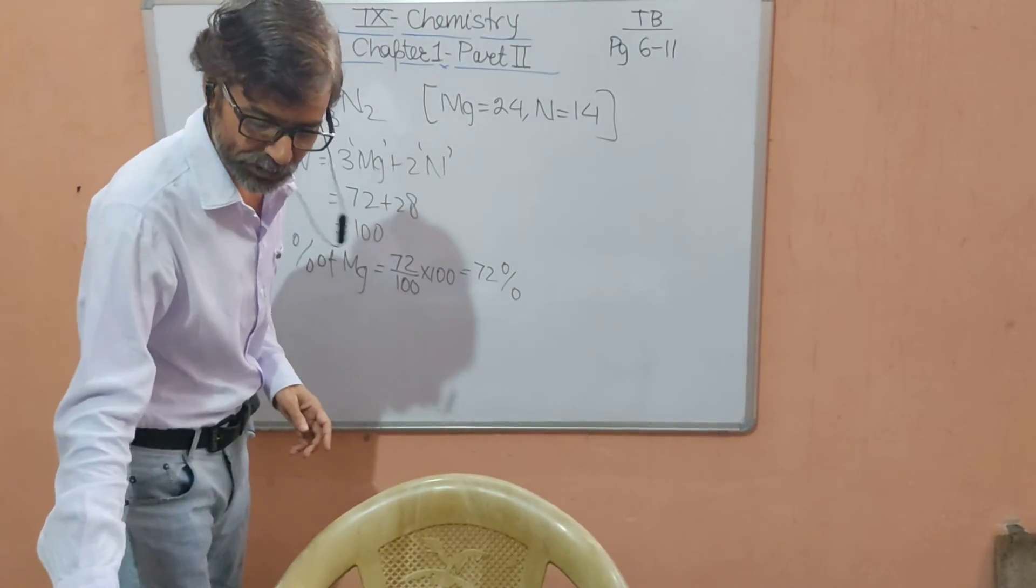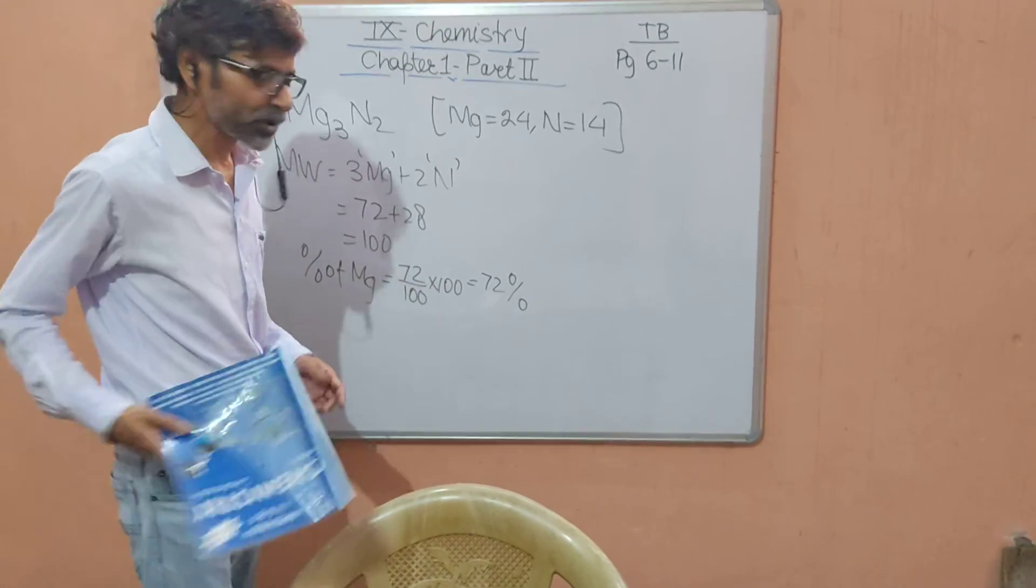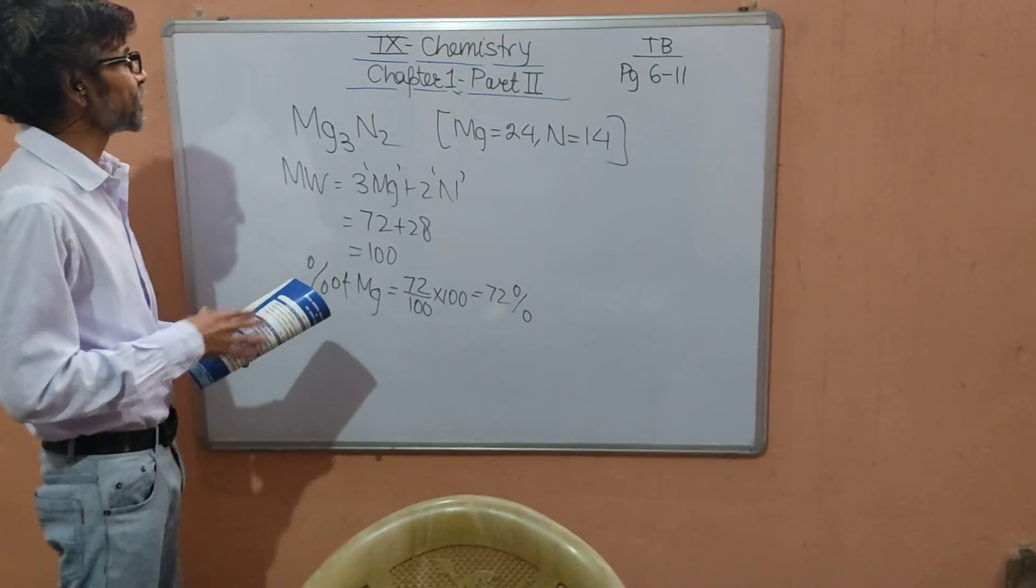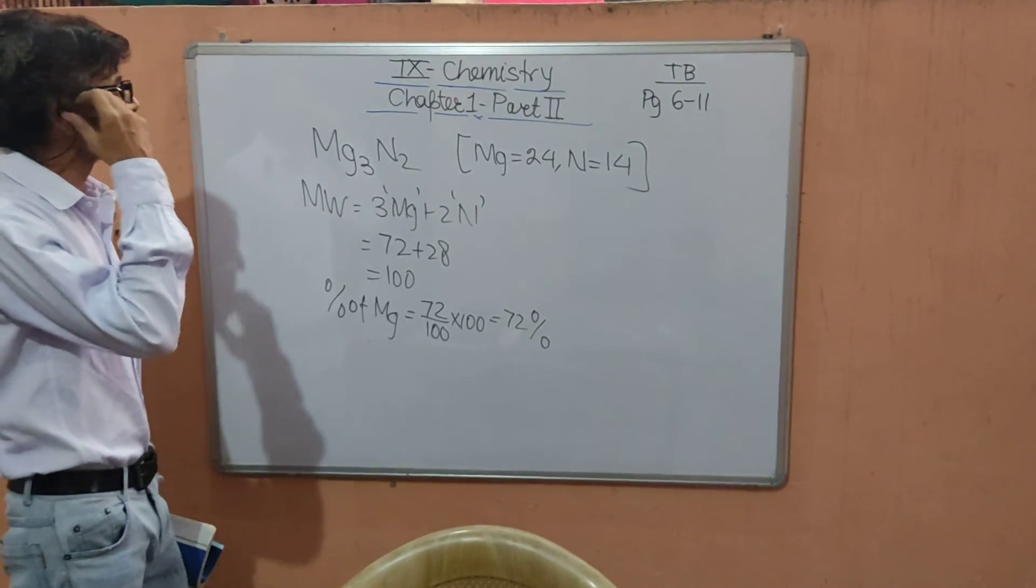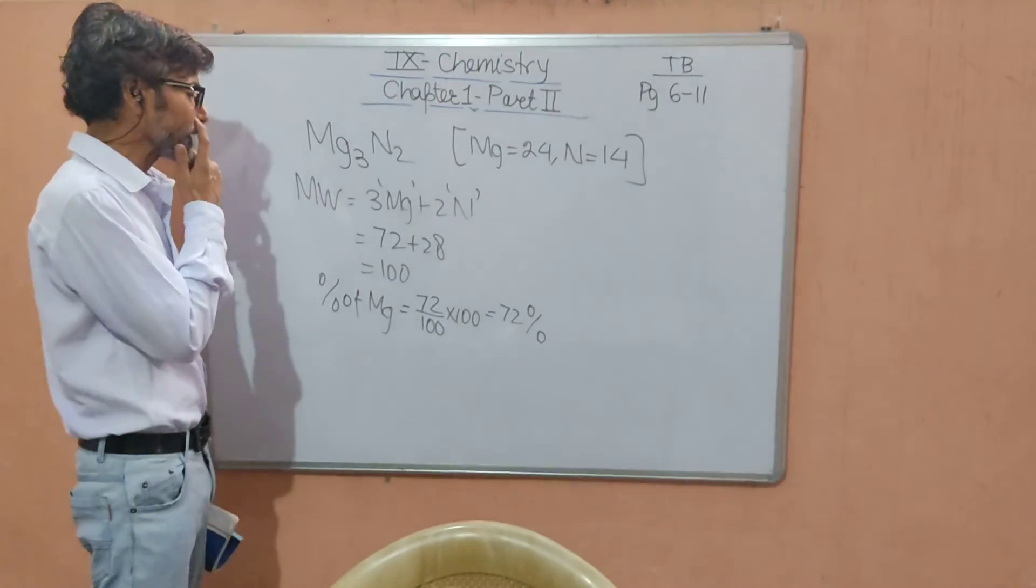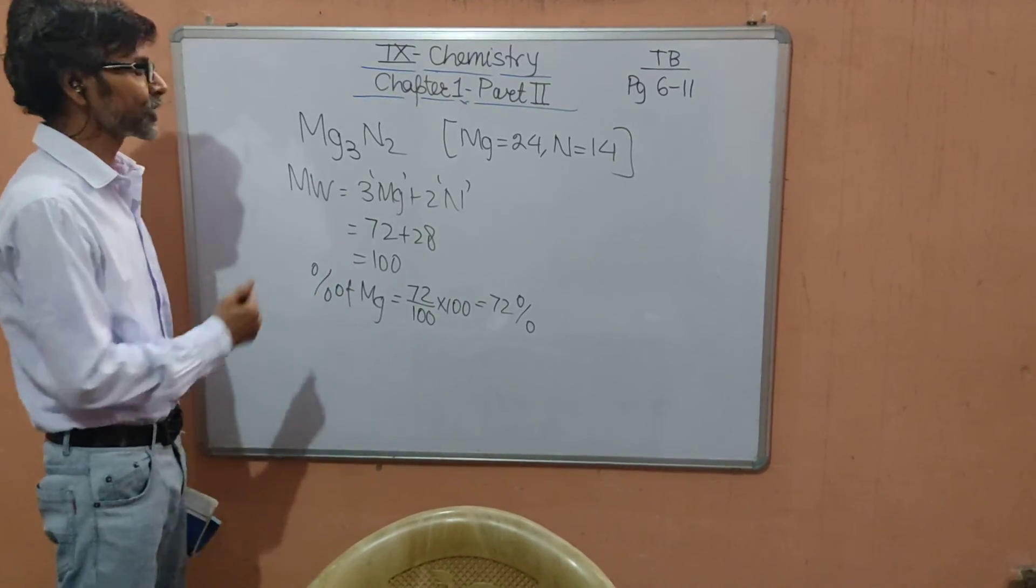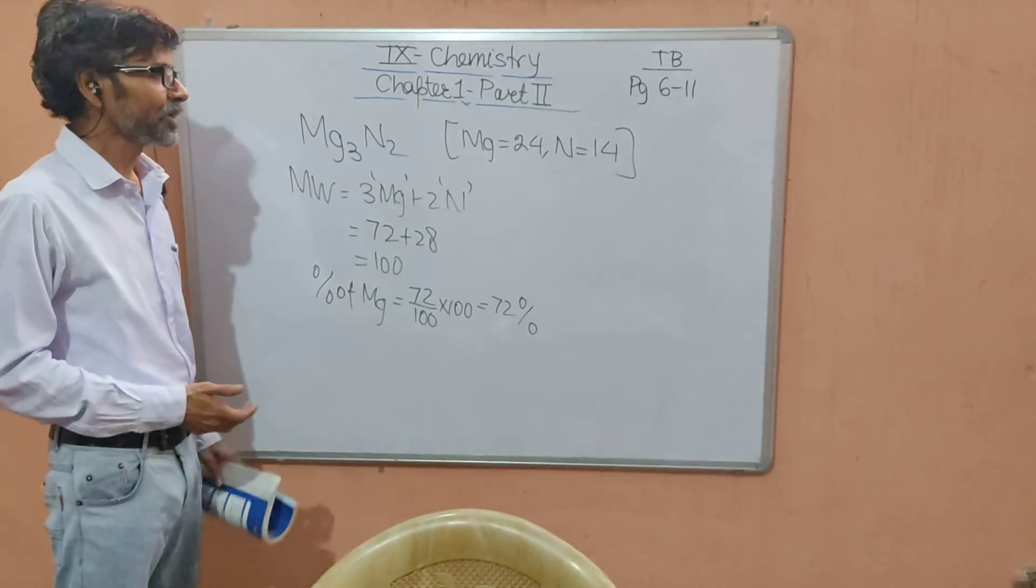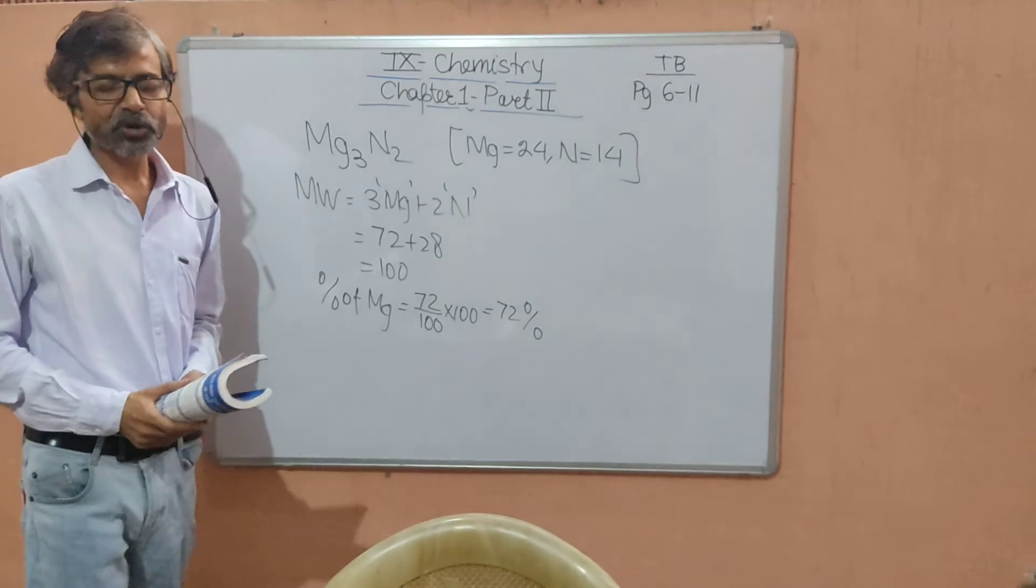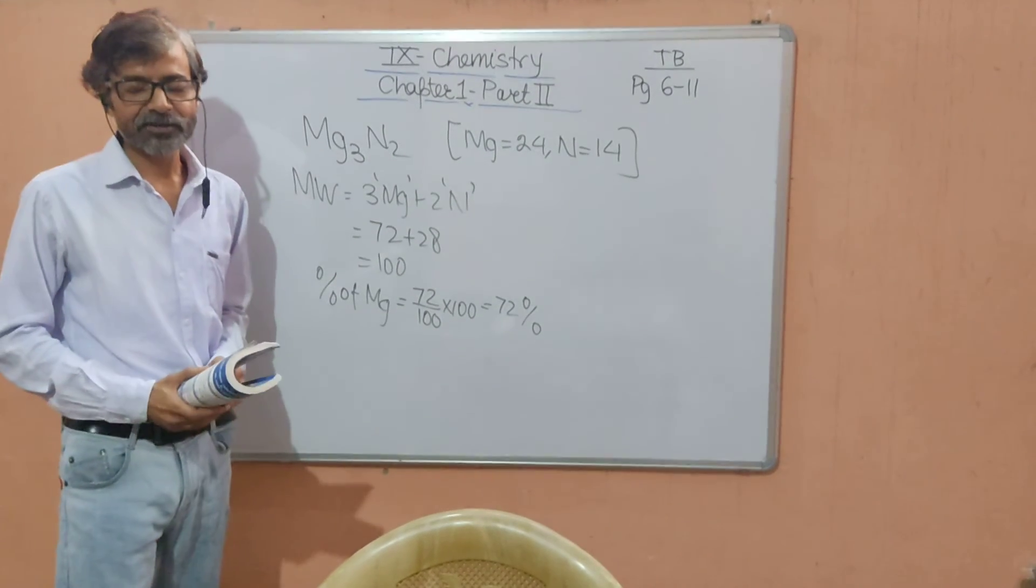Children, in today's class we talked about the chemical equation, balancing the chemical equation, the relative atomic mass, then molecular weight calculation, and the percentage composition calculation. With this we are concluding chapter two. You can do all the exercises given in the chapter.